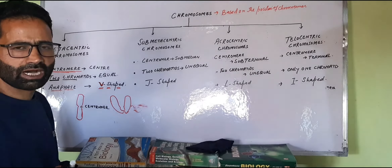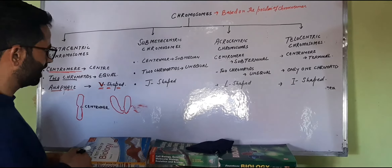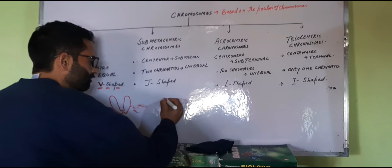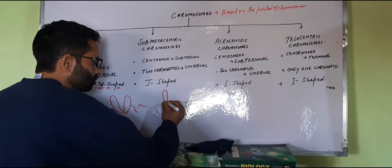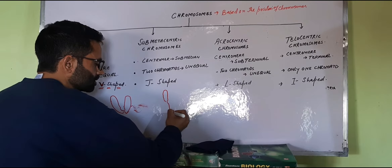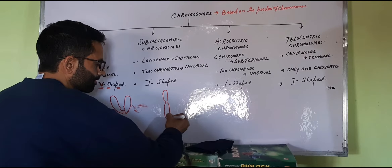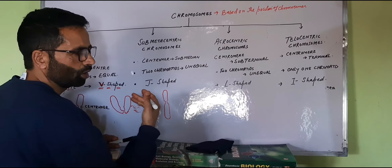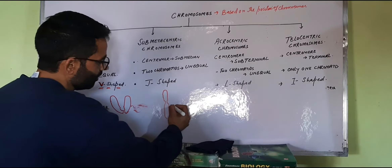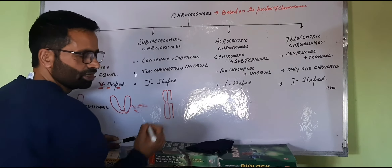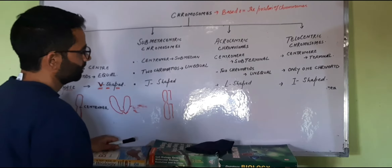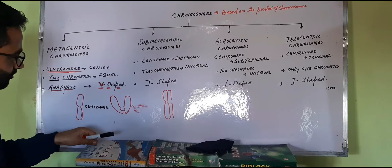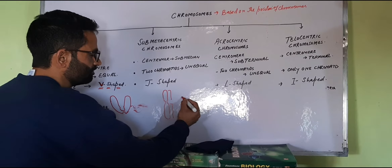When the centromere comes slightly away from the center, one chromatid arm will be small while the other chromatid arm will be long in size. So the two arms or two chromatids are not of the same size — one arm is short and one arm is long.